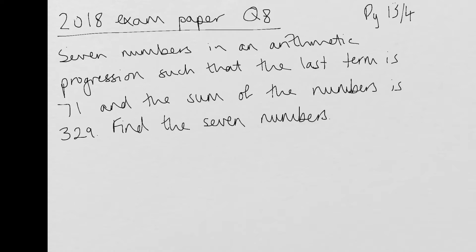Seven numbers in an arithmetic progression. It should say find, find the seven numbers in an arithmetic progression such that the last term is 71 and the sum of the numbers is 329. Find the seven numbers. So this was a five mark question for you to do, and I'm just going to talk you through step by step what you would do for this.